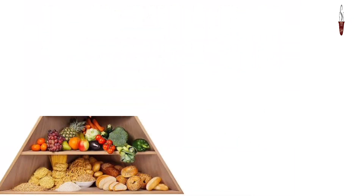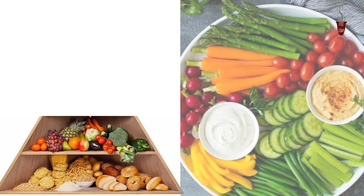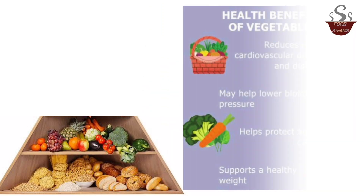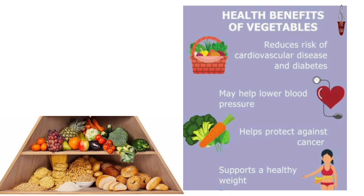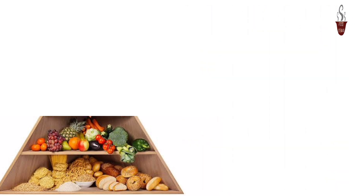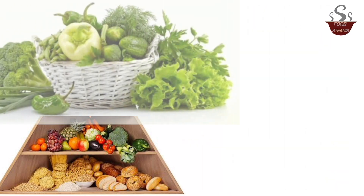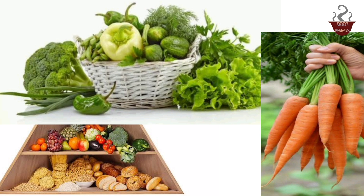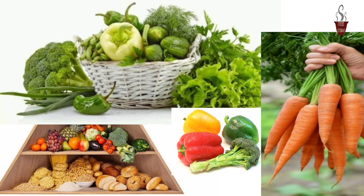Vegetables — second level. Encourages a variety of colorful vegetables rich in vitamins, minerals, and fiber. Includes options like leafy greens, carrots, broccoli, and peppers.